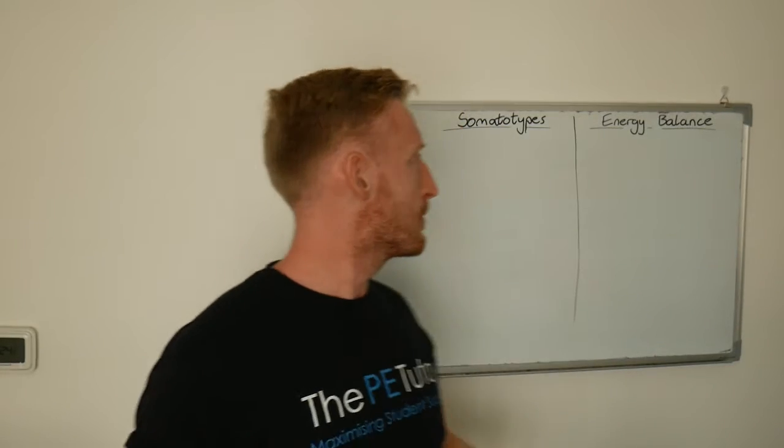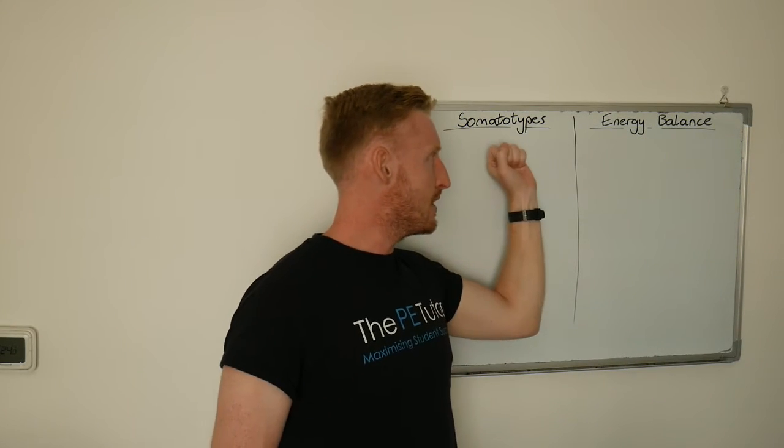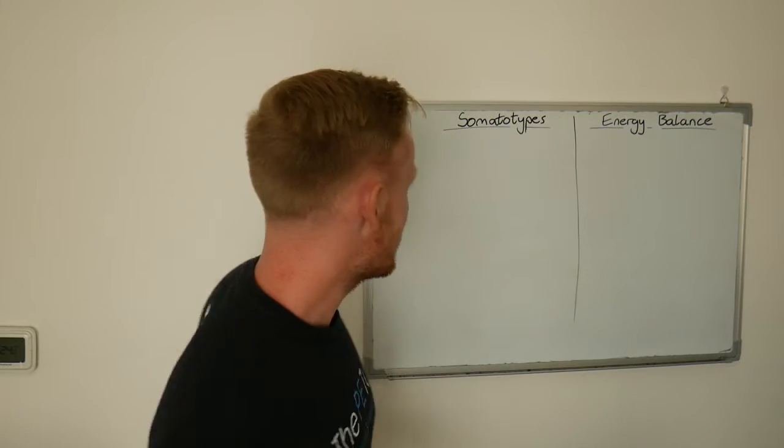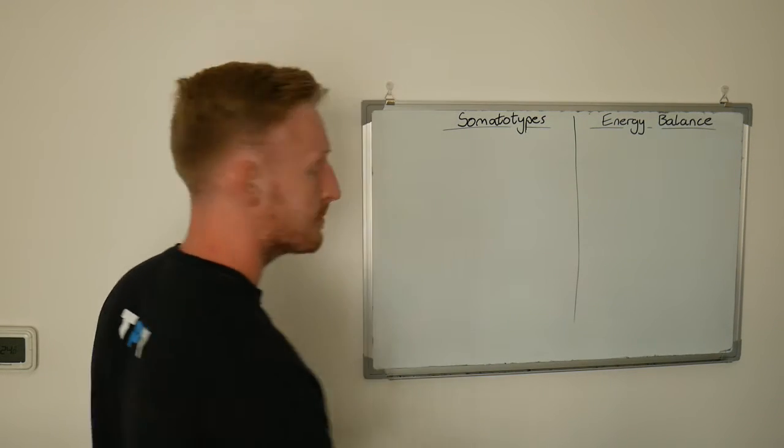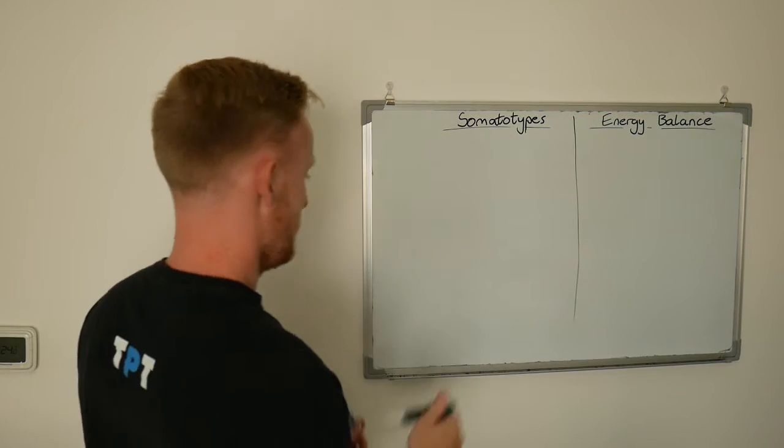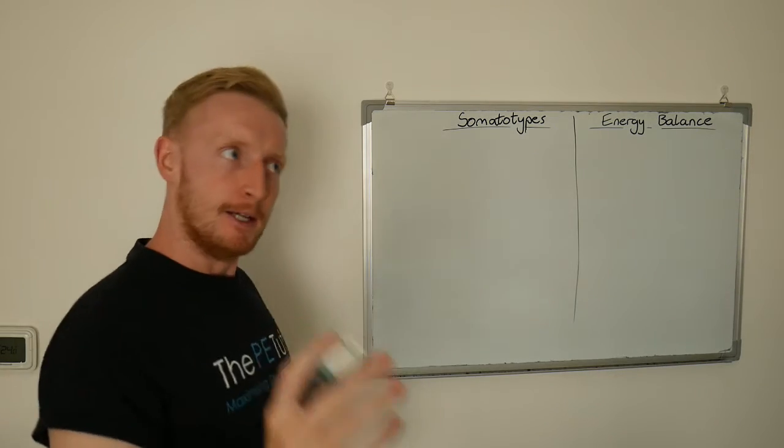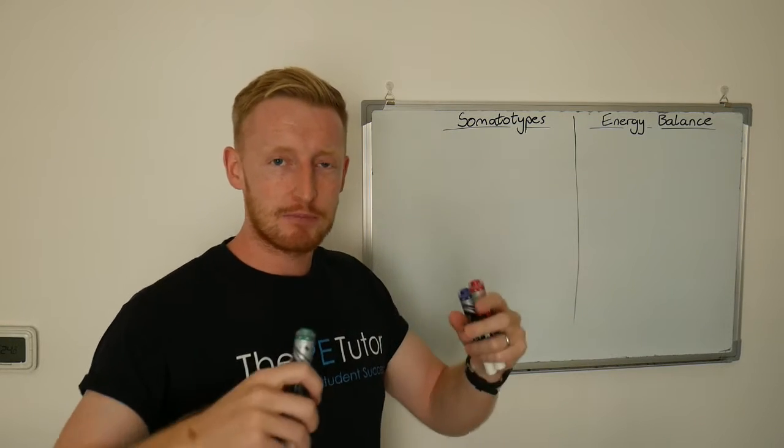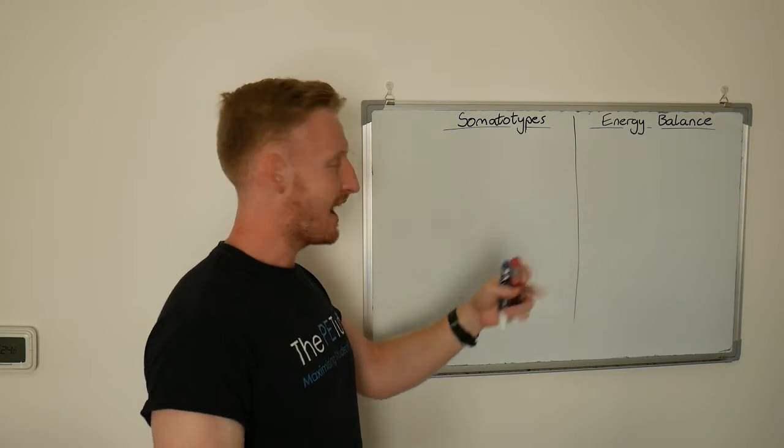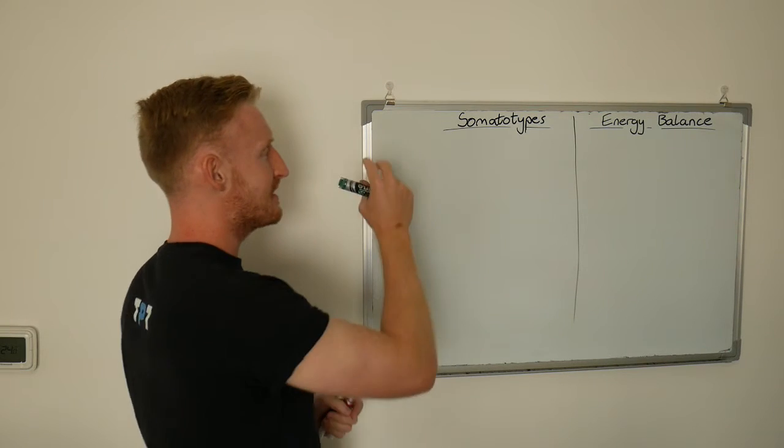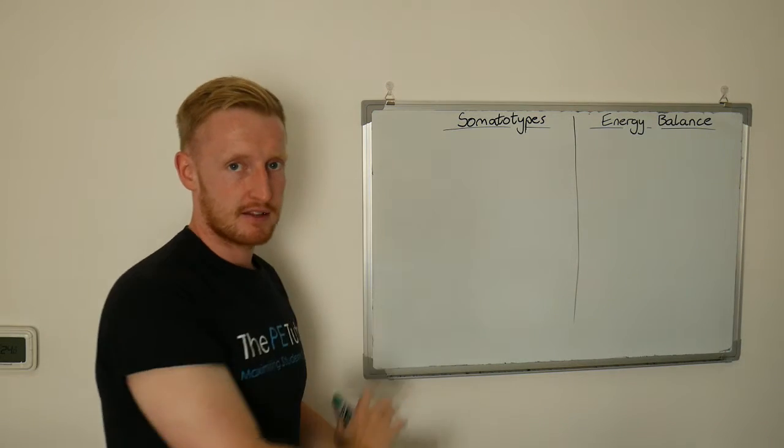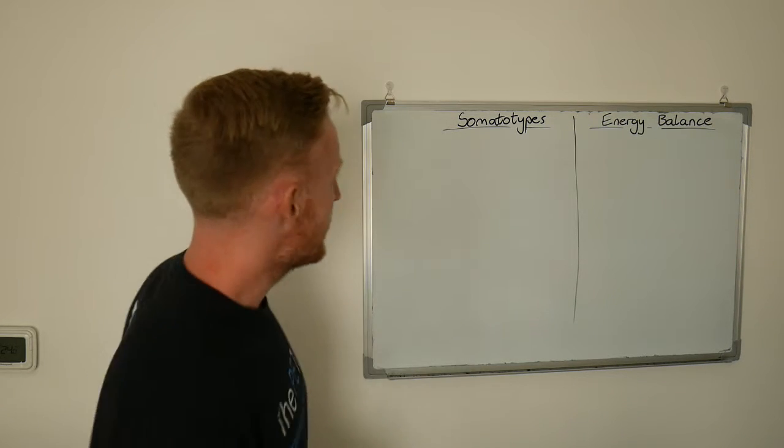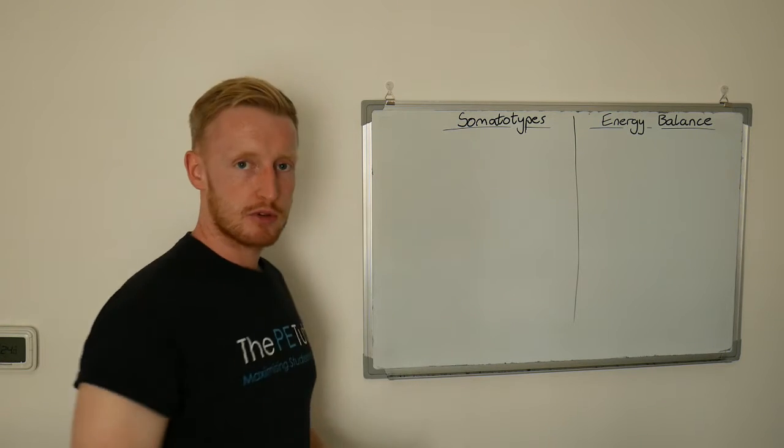Hello and welcome to this mini lesson from inside the PE portal. Today we are looking at somatotypes and energy balance and how they're a little bit related. So we'll start off with somatotypes, for which there are three. Before I put them down, research has come out since this theory emerged and it's being discredited by some and backed up by others. Just bear in mind that this is not absolute fact, this is an opinion when trying to apply somatotypes into sport.